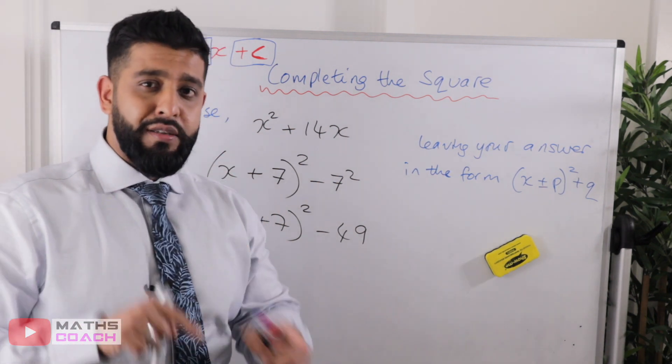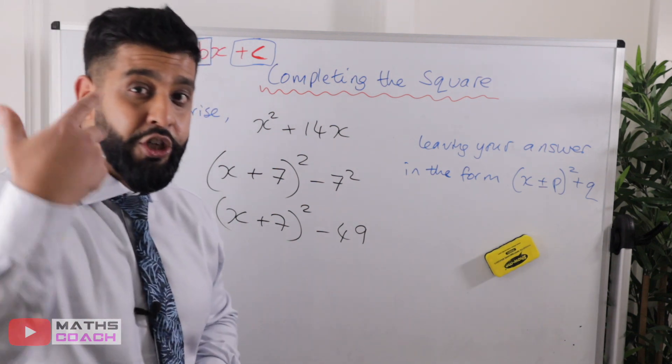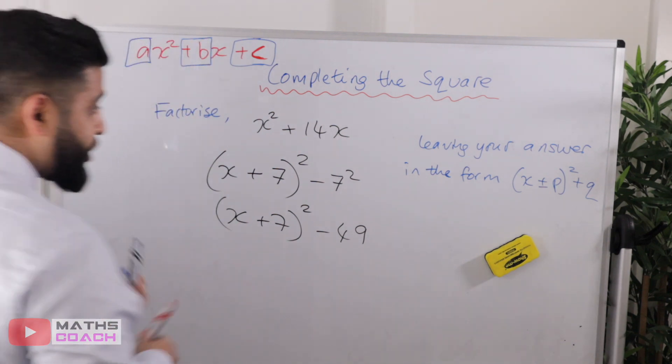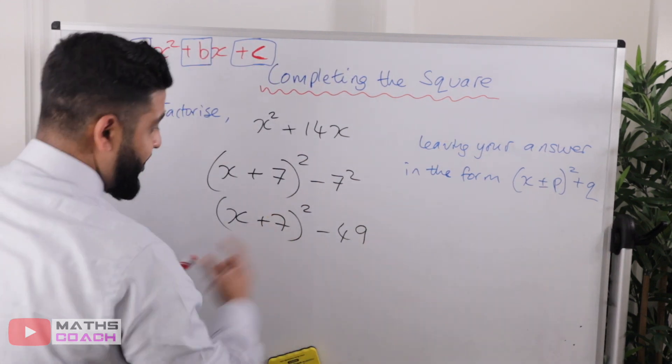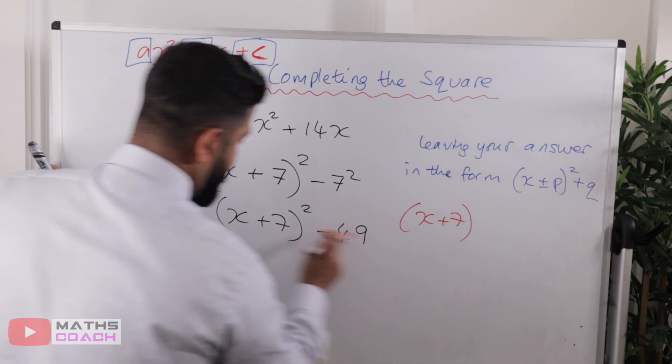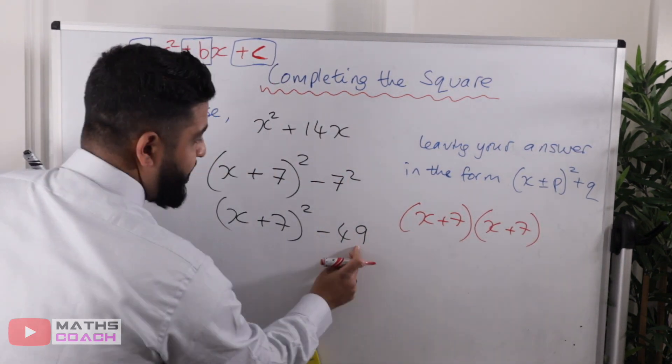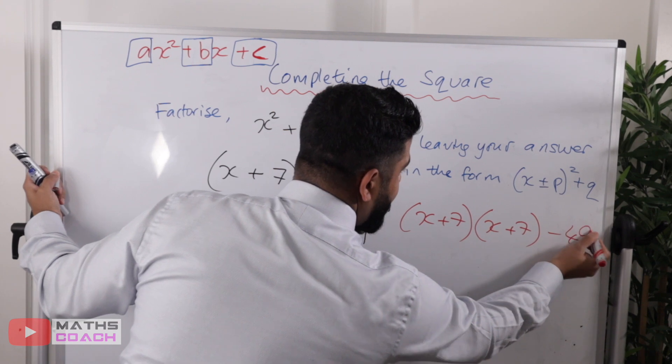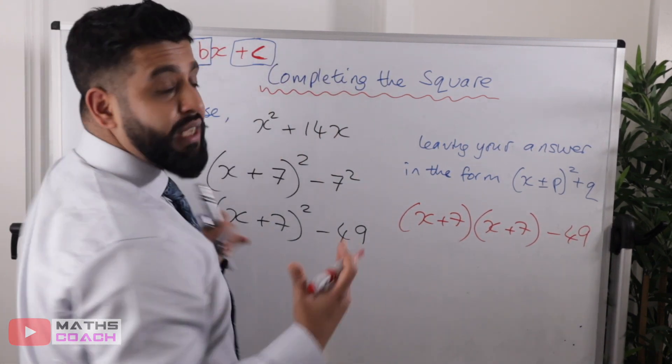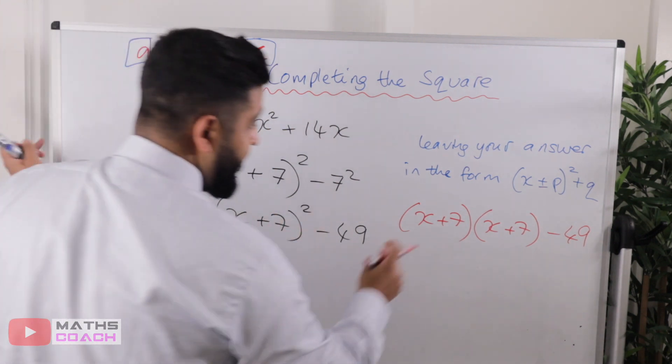Now, what I didn't do in the last example, I forgot to show you is whether this is correct or not. And we can check this. How? By actually expanding these brackets out. So we have (x + 7)². So I'm going to do two of those brackets.